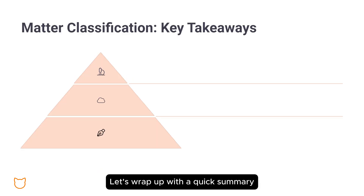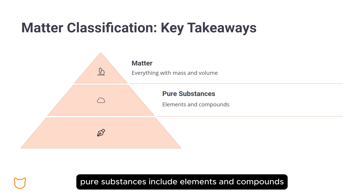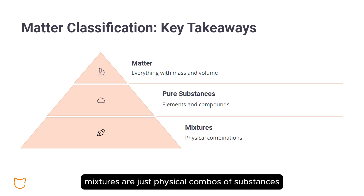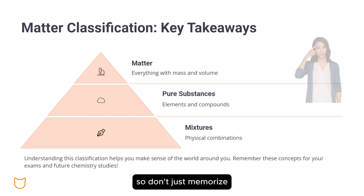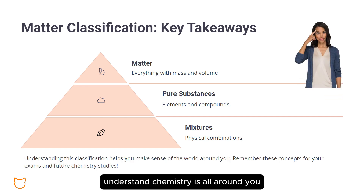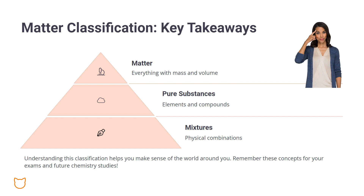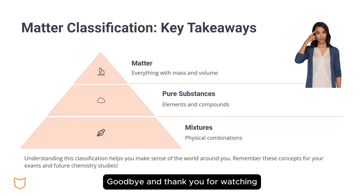Let's wrap up with a quick summary. Matter is anything with mass and volume. Pure substances include elements and compounds. Mixtures are just physical combinations of substances. Even though mixtures aren't a big focus in SPM exams, they're super important in real life, because most things we deal with daily are mixtures. So don't just memorize — understand. Chemistry is all around you: your food, your breath, even the soap in your bathroom. Now go out there and observe the world like a real chemist. Goodbye, and thank you for watching.